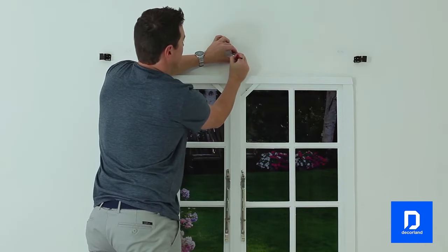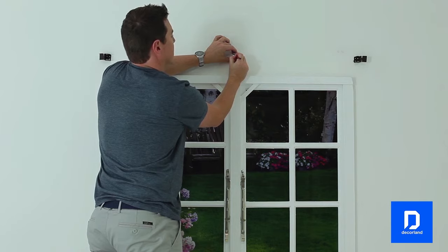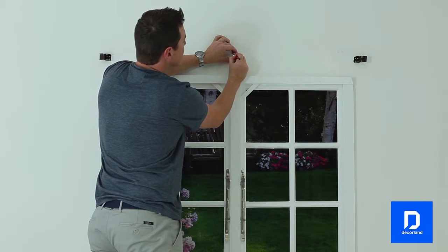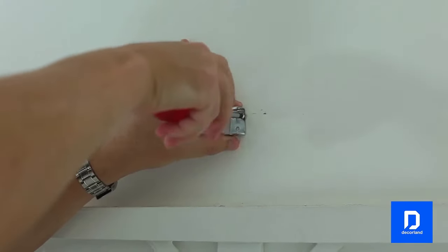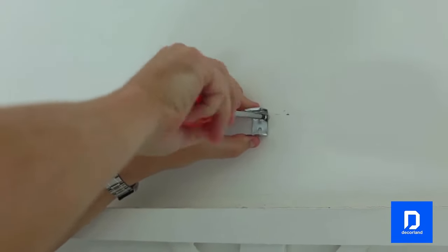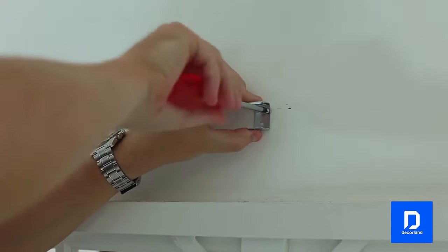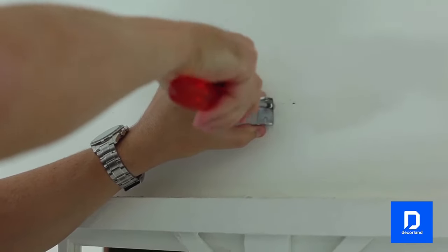For larger blinds, center support brackets will also need to be installed. To do this, hold the blind in place and look on the underside of the headrail for a slit. Make a pencil mark on the wall in line with this slit, and this is where the center bracket should go.